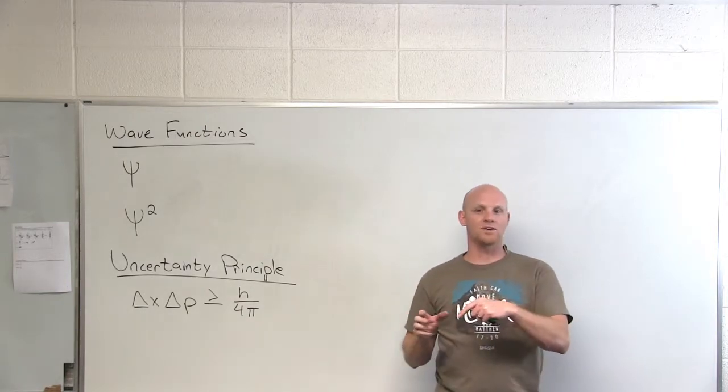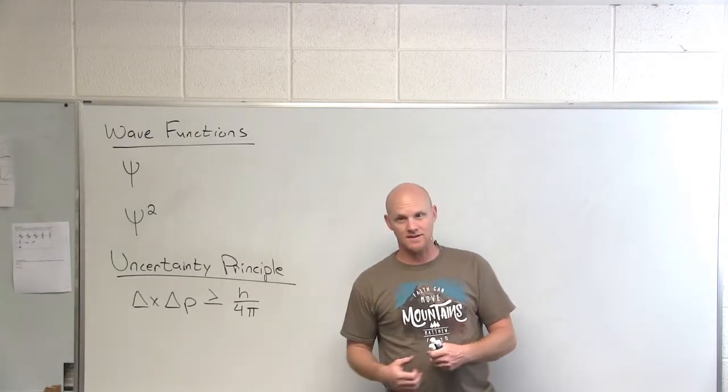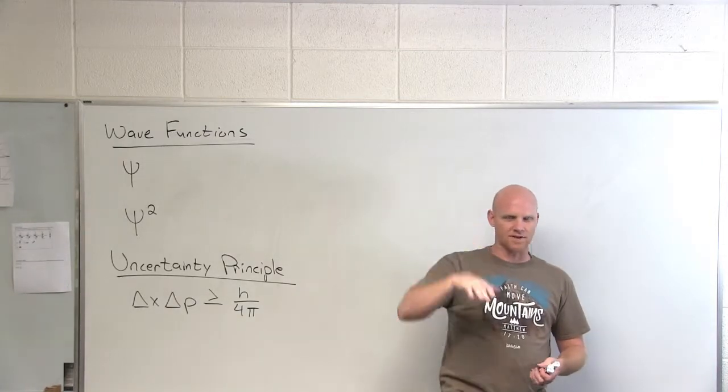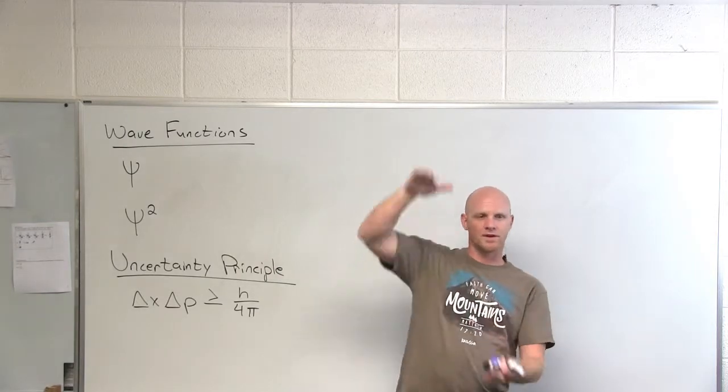And so the idea is this: if a photon has a certain wavelength associated with it, well okay, the bigger or shorter the wavelength, I get an idea of, gives me an idea of where this electron is.